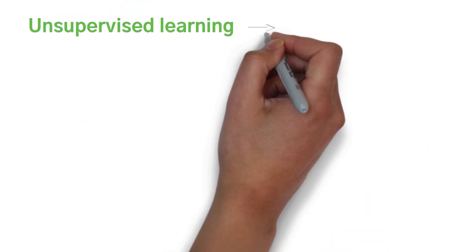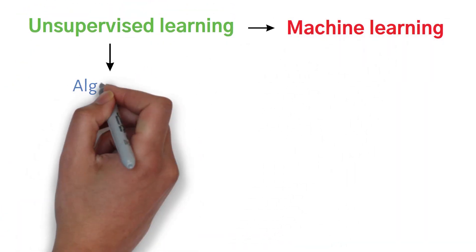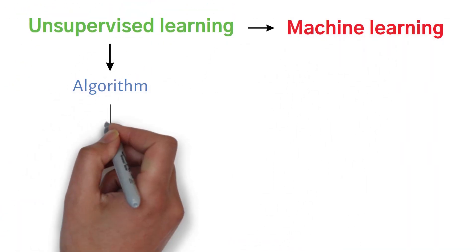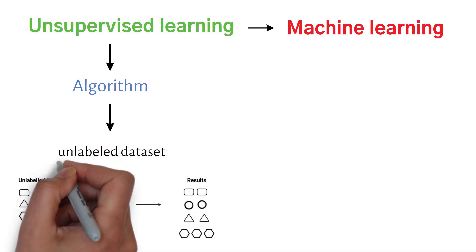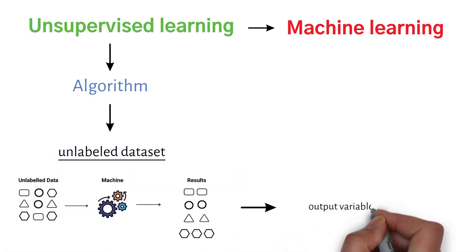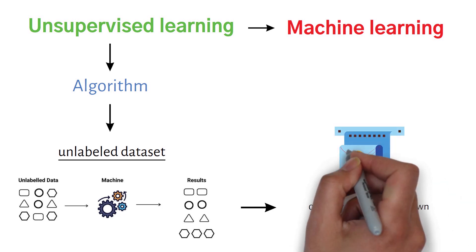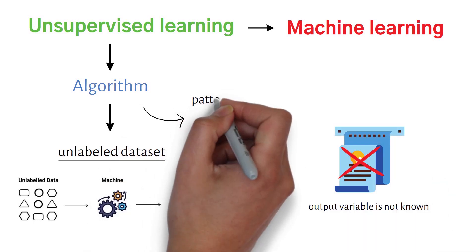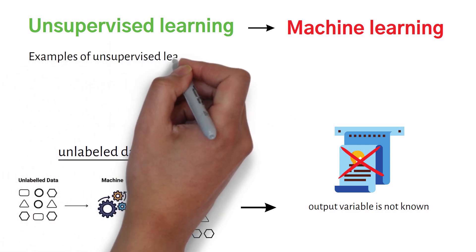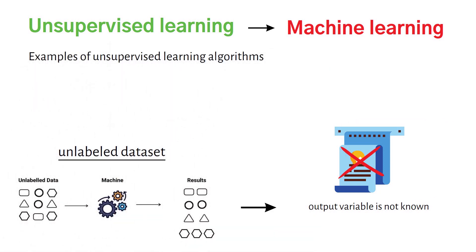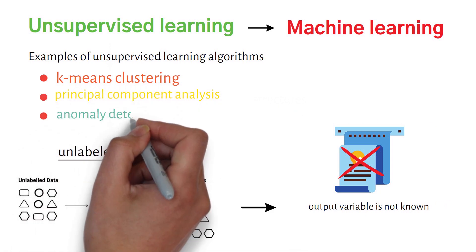Unsupervised learning is another type of machine learning where the algorithm is trained on an unlabeled dataset. In an unlabeled dataset, the output variable is not known, and the algorithm must find patterns or structures in the data on its own. Examples of unsupervised learning algorithms include k-means clustering, principal component analysis, and anomaly detection.